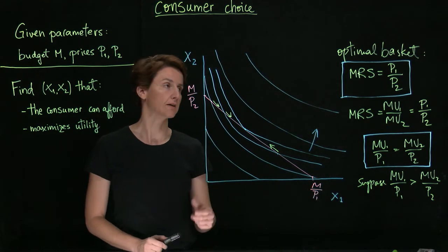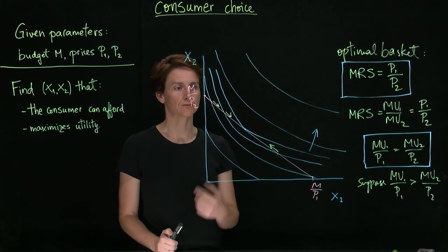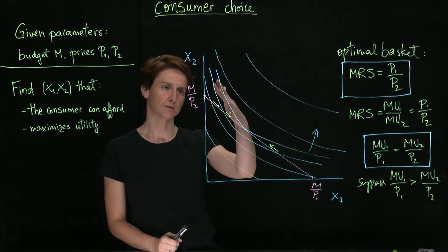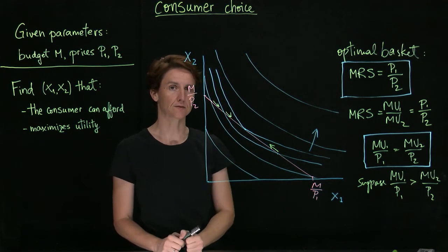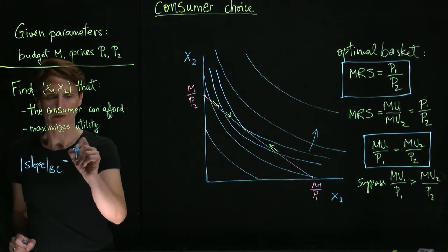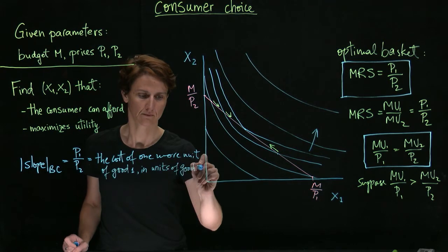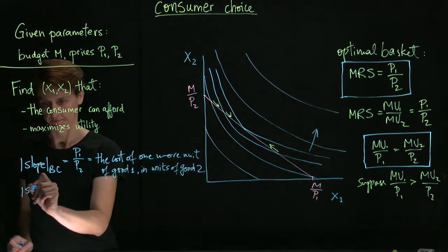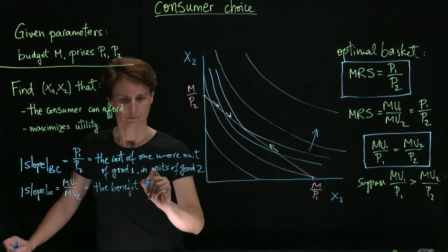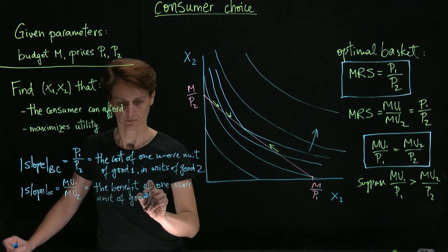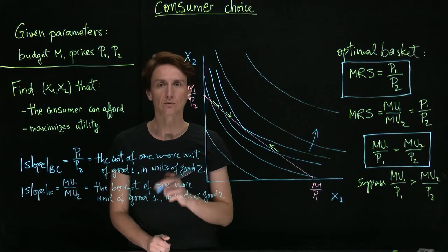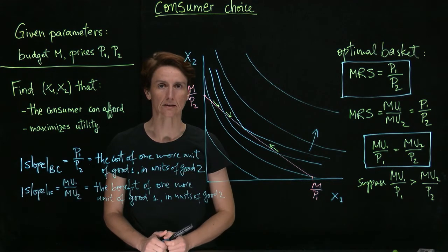And finally, there's a third way of arriving at the solution. If we remember what the slopes of the budget constraint and the indifference curves mean, this last method consists of running cost-benefit analysis. To remind yourself of where these interpretations come from, you could review the videos on the budget constraint and on utility.